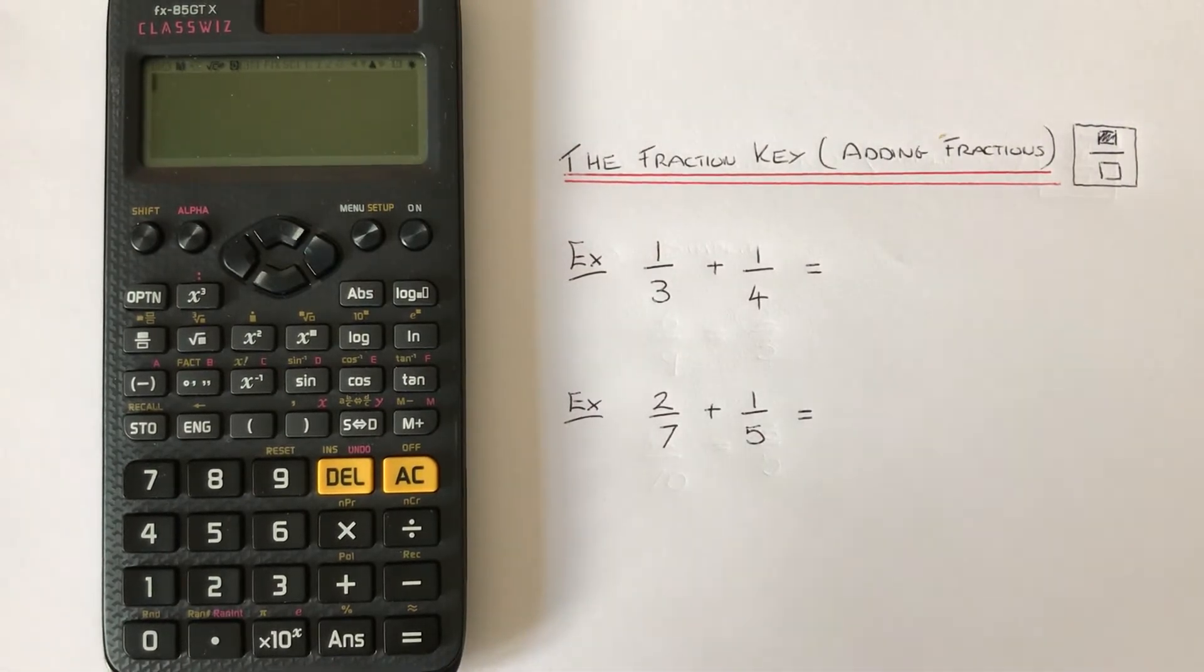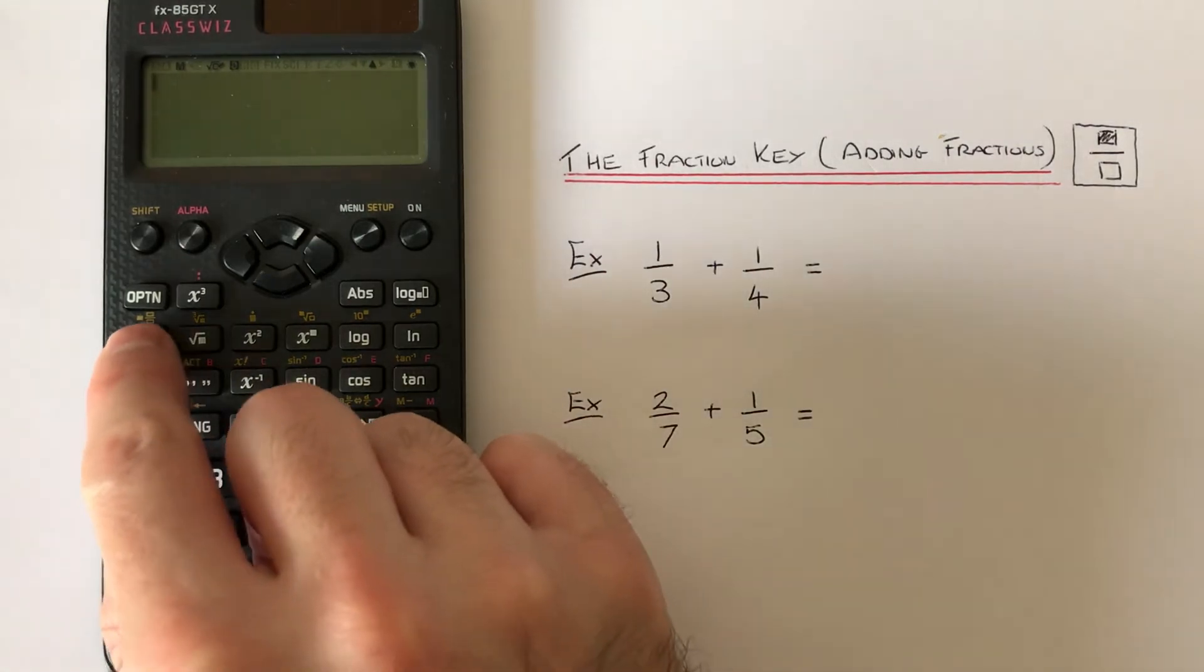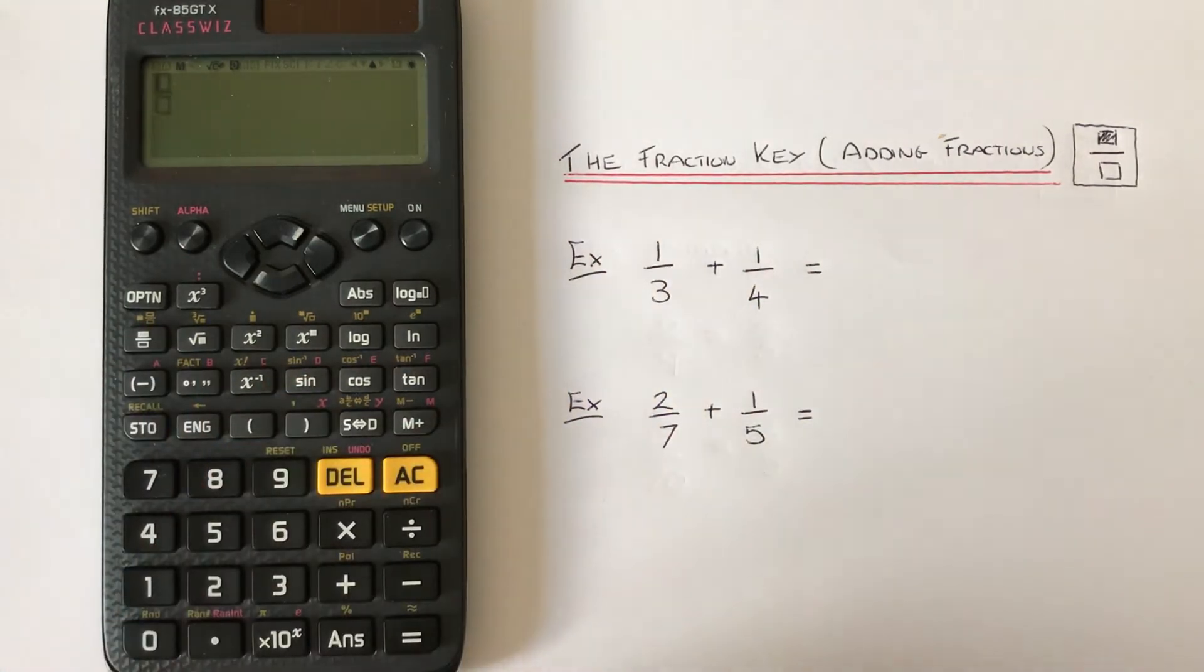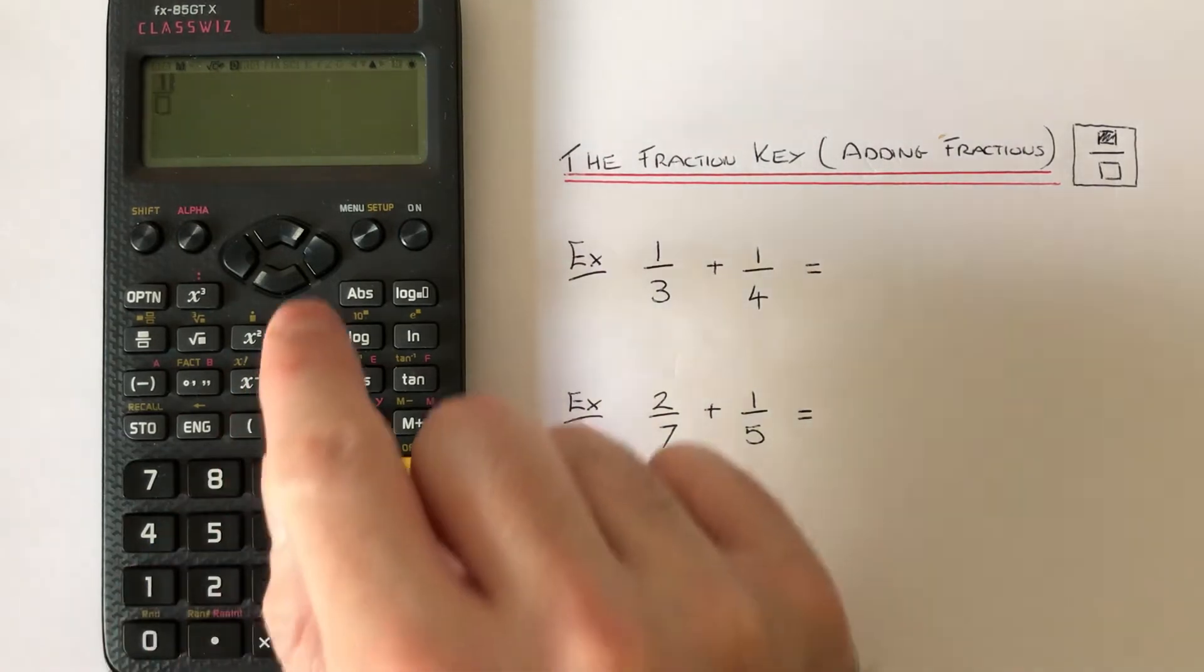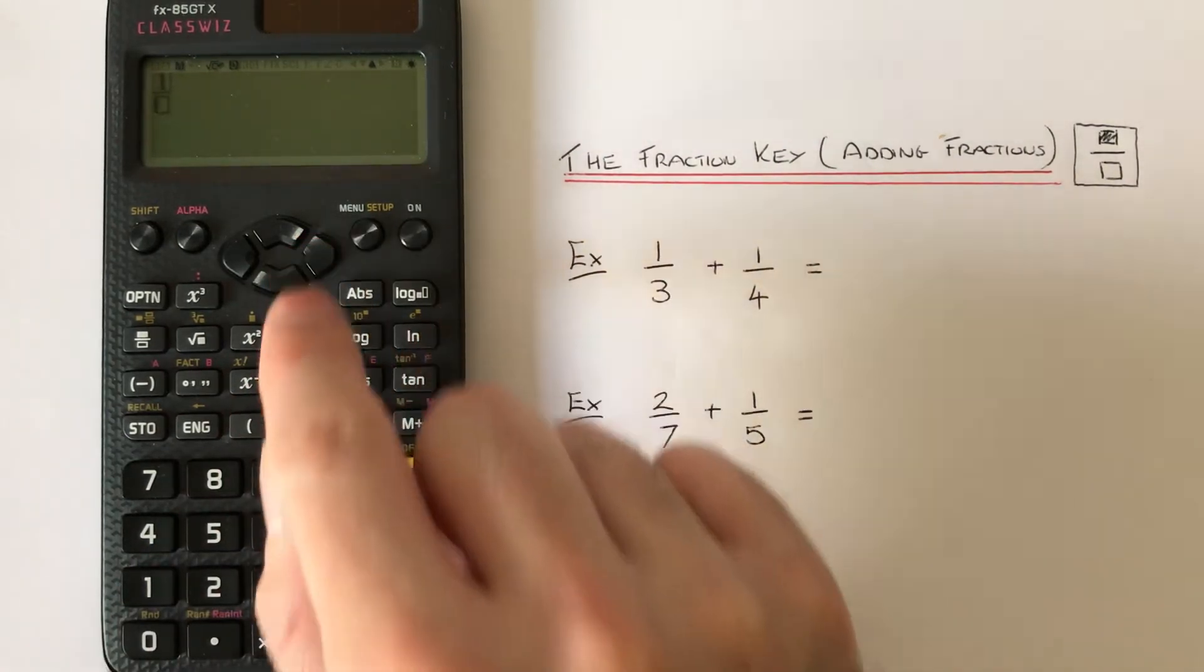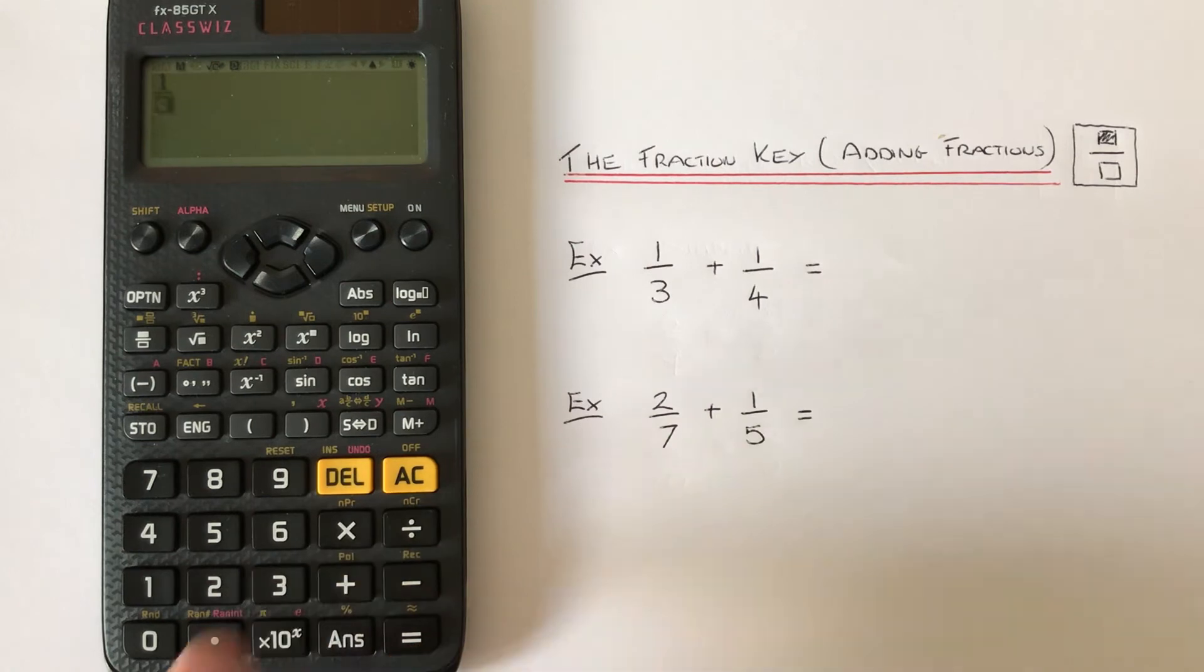We've got to work out one third add one quarter. If we press the fraction key, type in one, then use the right cursor and type in three.